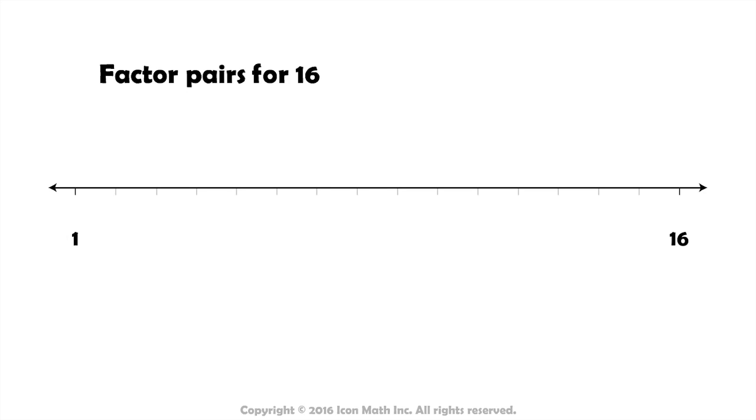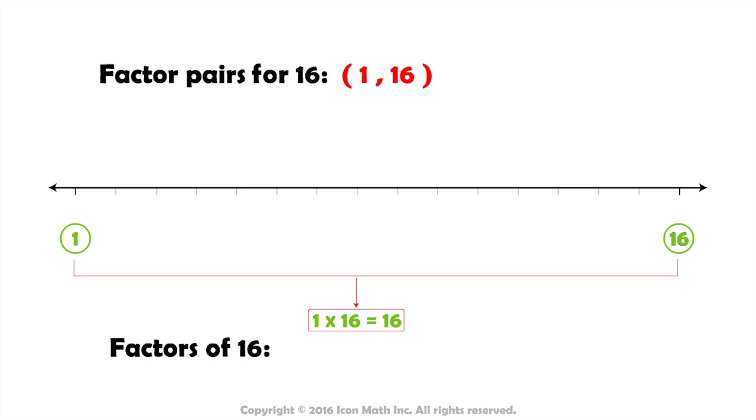As you learned before, when looking for factors for a given number, the number itself and the number 1 are always factors. So the first factor pair for the number 16 is 1 and 16, which means that 1 and 16 are factors for the number 16.